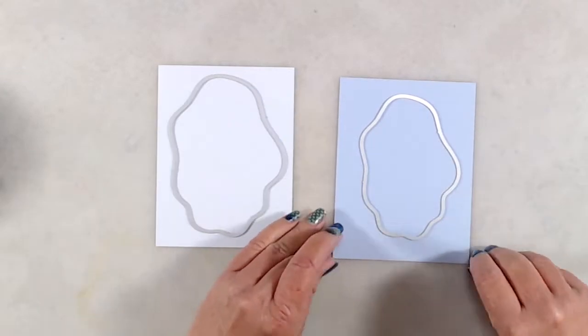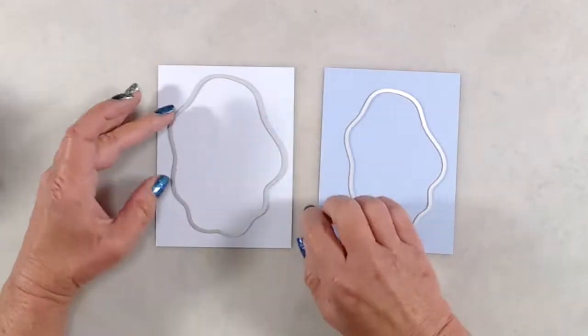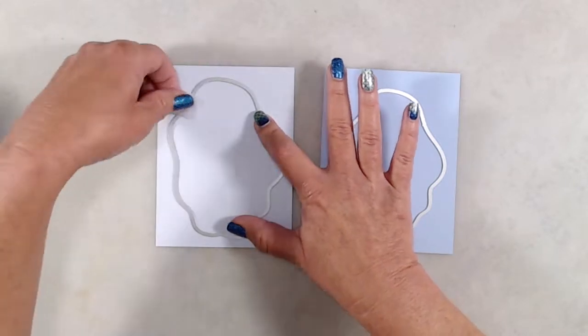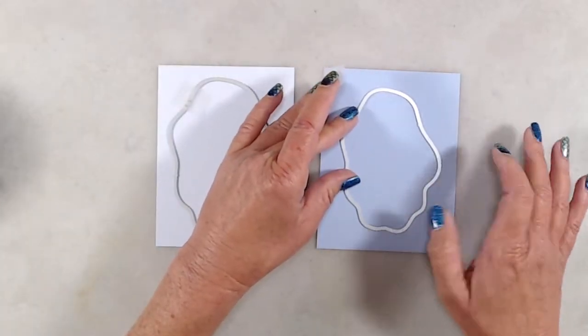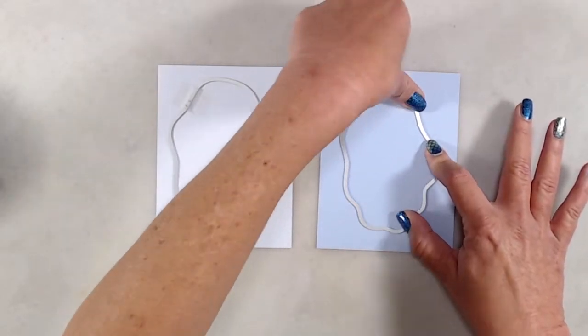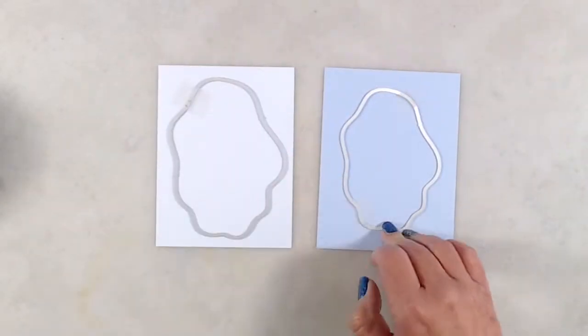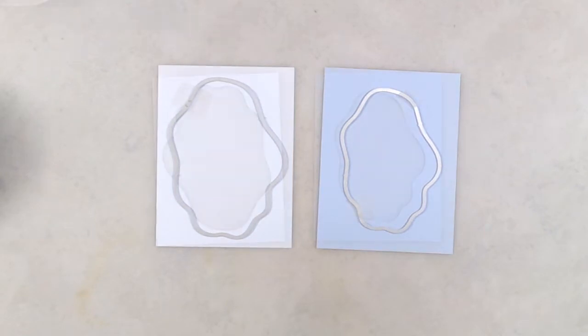I used the second largest wavy nested frame die on the lighter blue and the third largest wavy nested frame die on the darker blue cardstock and ran those through my Gemini Jr.